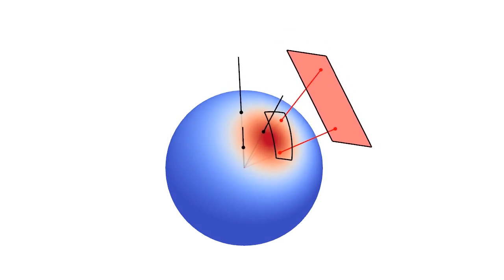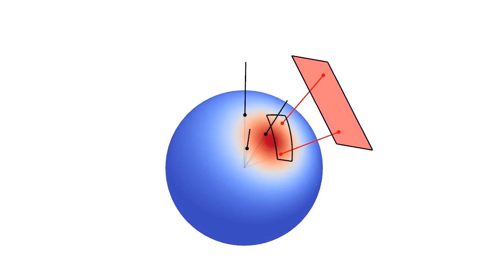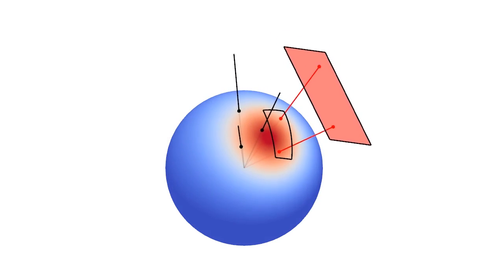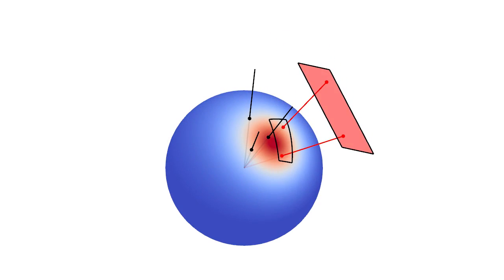We show that the transformed lines belong to a new distribution for which we derive a closed form. From this property, we deduce that if we have a distribution with analytic integration properties over spherical polygons, then all of its linearly transformed variants can be integrated too.